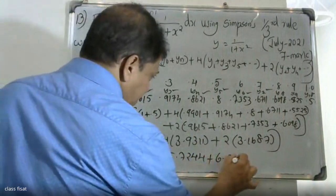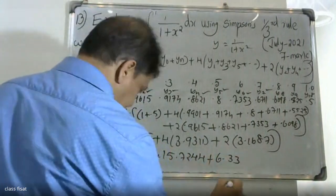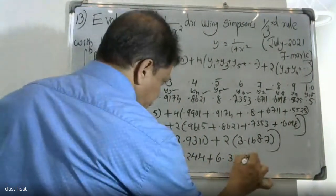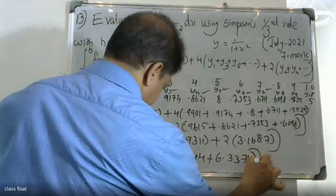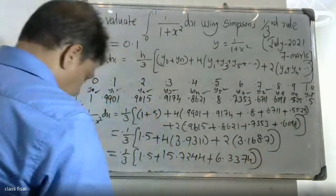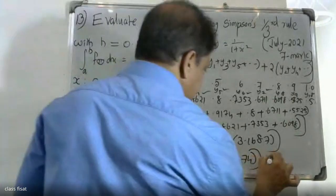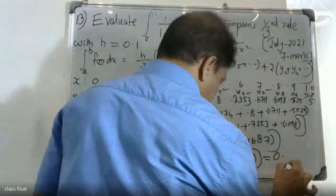Simplifying: 0.1/3 times [1.5 plus 4 into 3.9311 plus 2 into 3.1687] equals 0.1/3 times [1.5 + 15.7244 + 6.3374]. The answer simplifies to 0.7853.